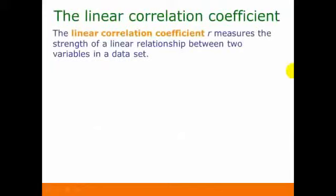Another way to determine the strength of a linear relationship is by looking at the linear correlation coefficient R, which measures the strength of a linear relationship between two variables in a data set. The number R is actually calculated from the values in the data, but for right now we're not going to look at actually calculating it — we're just going to look at the relationship between R and the scatterplot.